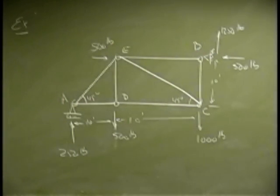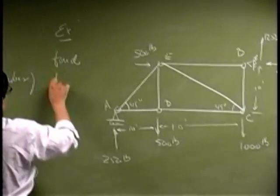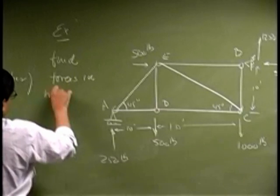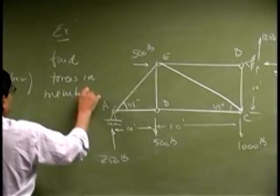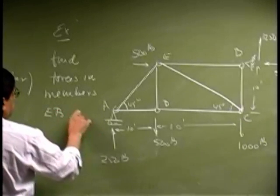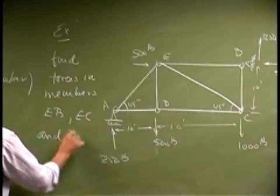We walked through this example and found force in every member using method of joints. But now, we want to find forces in members EB, EC, and DC.